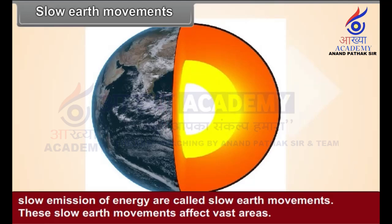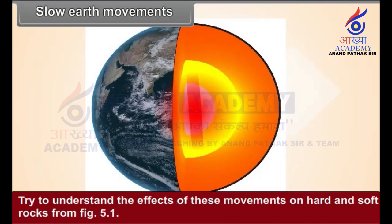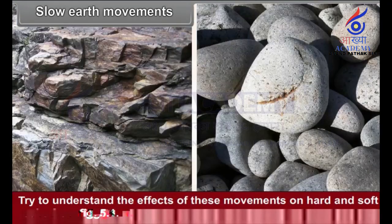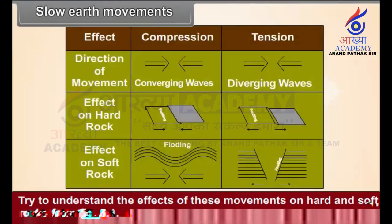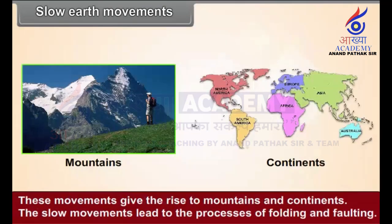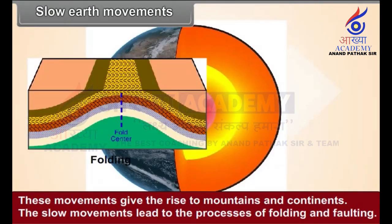These slow earth movements affect vast areas. These movements take place in a horizontal or vertical direction. Try to understand the effect of these movements on hard and soft rocks from figure 5.1. These movements give rise to mountains and continents. The slow movements lead to the processes of folding and faulting.